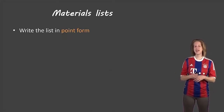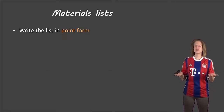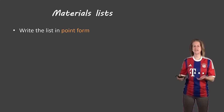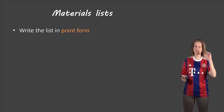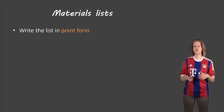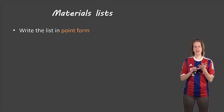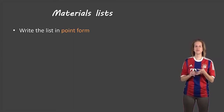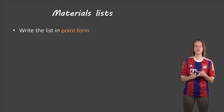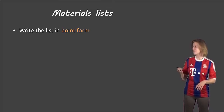The first one: materials lists are just written in point form — no proper English sentence structure here. You're just going to list in point form the materials that you use. That includes chemicals, it includes glassware, it includes computer programs if you used any, so all of the materials used.